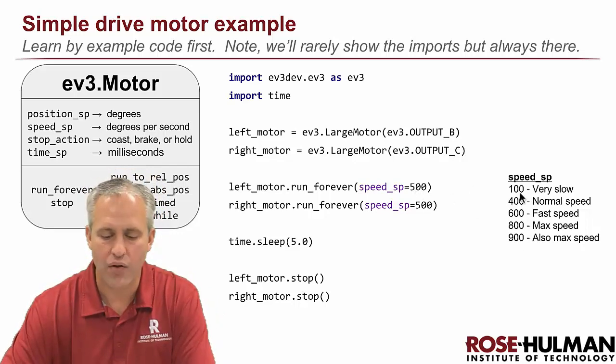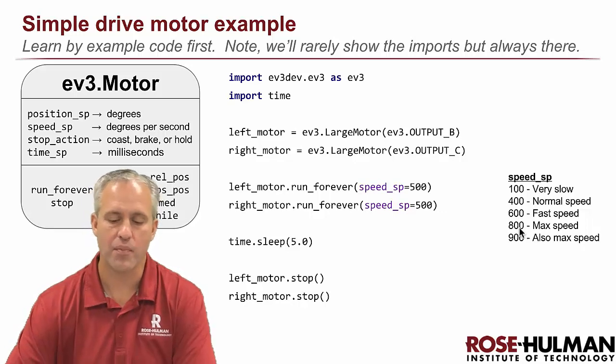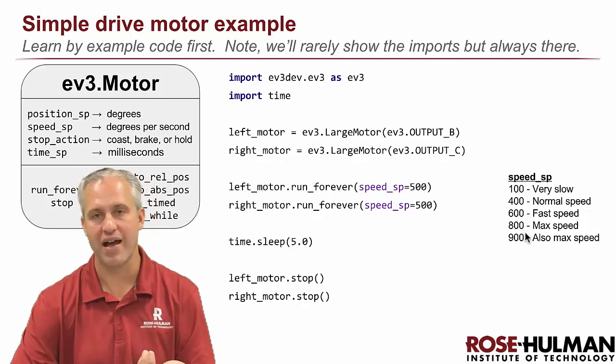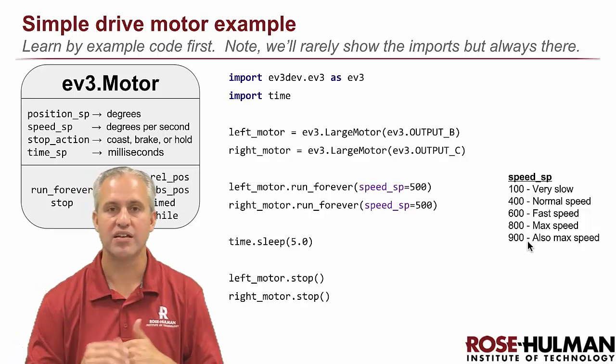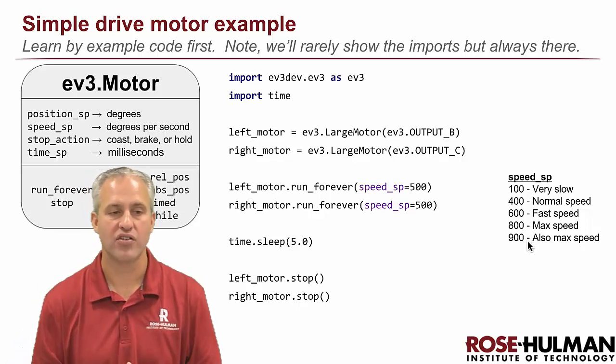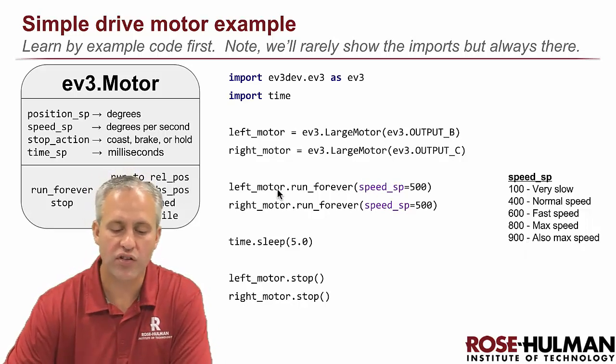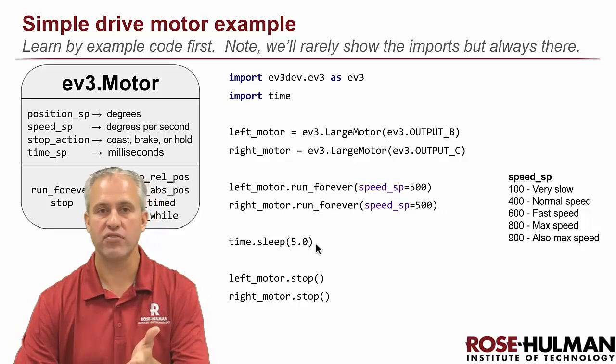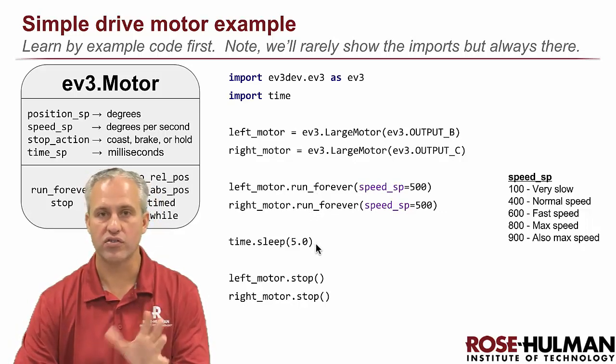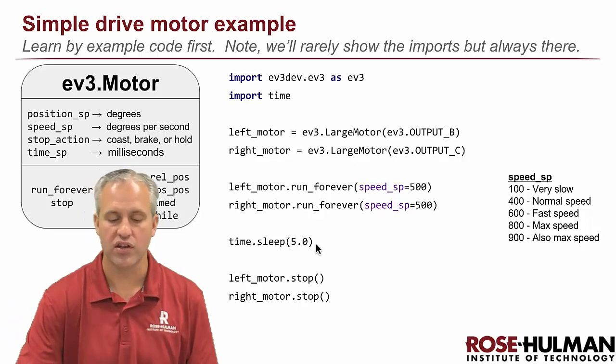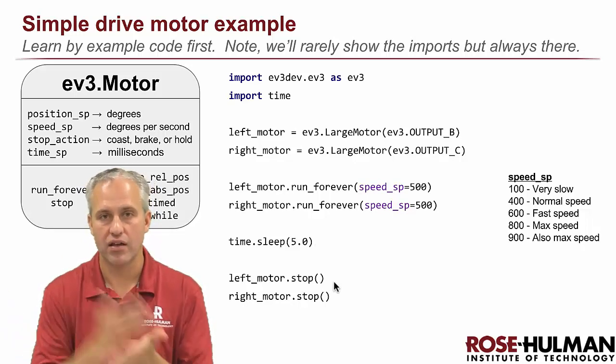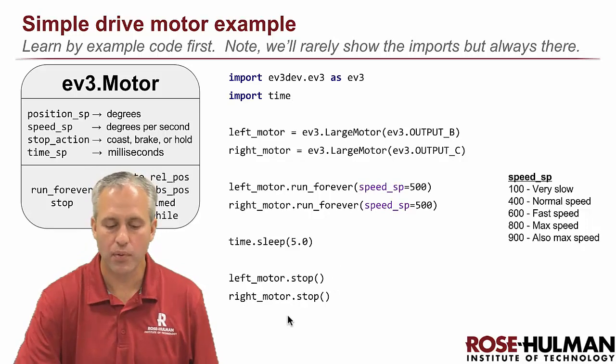Speeds on our robot, roughly, 100 is very, very slow. 400 is about normal. 600 is fast and 800 is max. If you put in a number bigger than 800, it still runs at the max of 800. Sometimes I intentionally put in 900, just because that guarantees it's going as fast as it can, right? So we started the left motor, and we started the right motor. And then we're using a time.sleep for five seconds. So just wait for five seconds. So the motor is going to go for five seconds. It's a blocking statement. And then the motor stop at the end of five seconds. Pretty simple program.